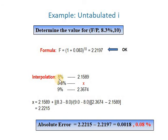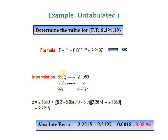For interpolation, get the factor value from the 8% table and the factor value from the 9% table. Then interpolate: x equals 2.1589 plus (8.3 − 8)/(9 − 8) times (2.3674 − 2.1589). This method gives a factor of 2.2215, while the equation gives 2.2197 — an absolute error of only 0.08%, which is acceptable.